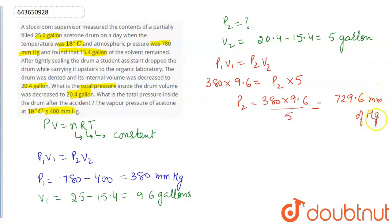Now we will find the total pressure. It will be P2 plus the partial pressure of acetone. Acetone partial pressure is fixed, so it will be plus 400. So we will solve this. It will be 1129.6 mmHg. So this is our correct answer.